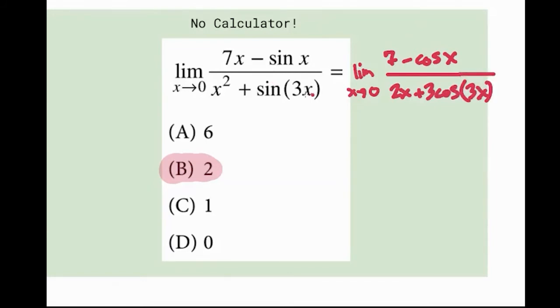If you do chain rule for this one, you have to do the outside layer first, which is the cosine, and then multiply by the inner derivative of 3X, which is 3. So it's 3 cosine 3X.